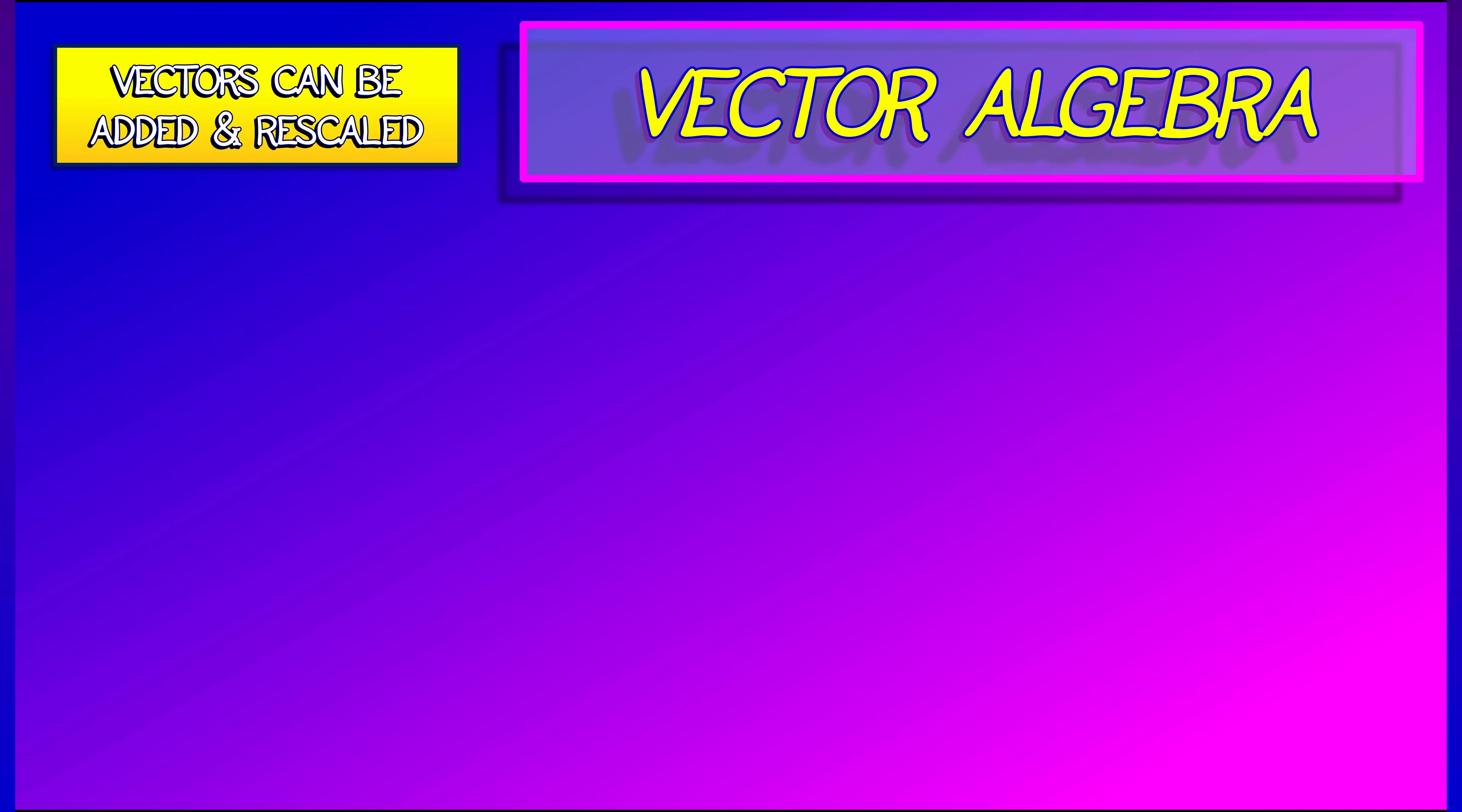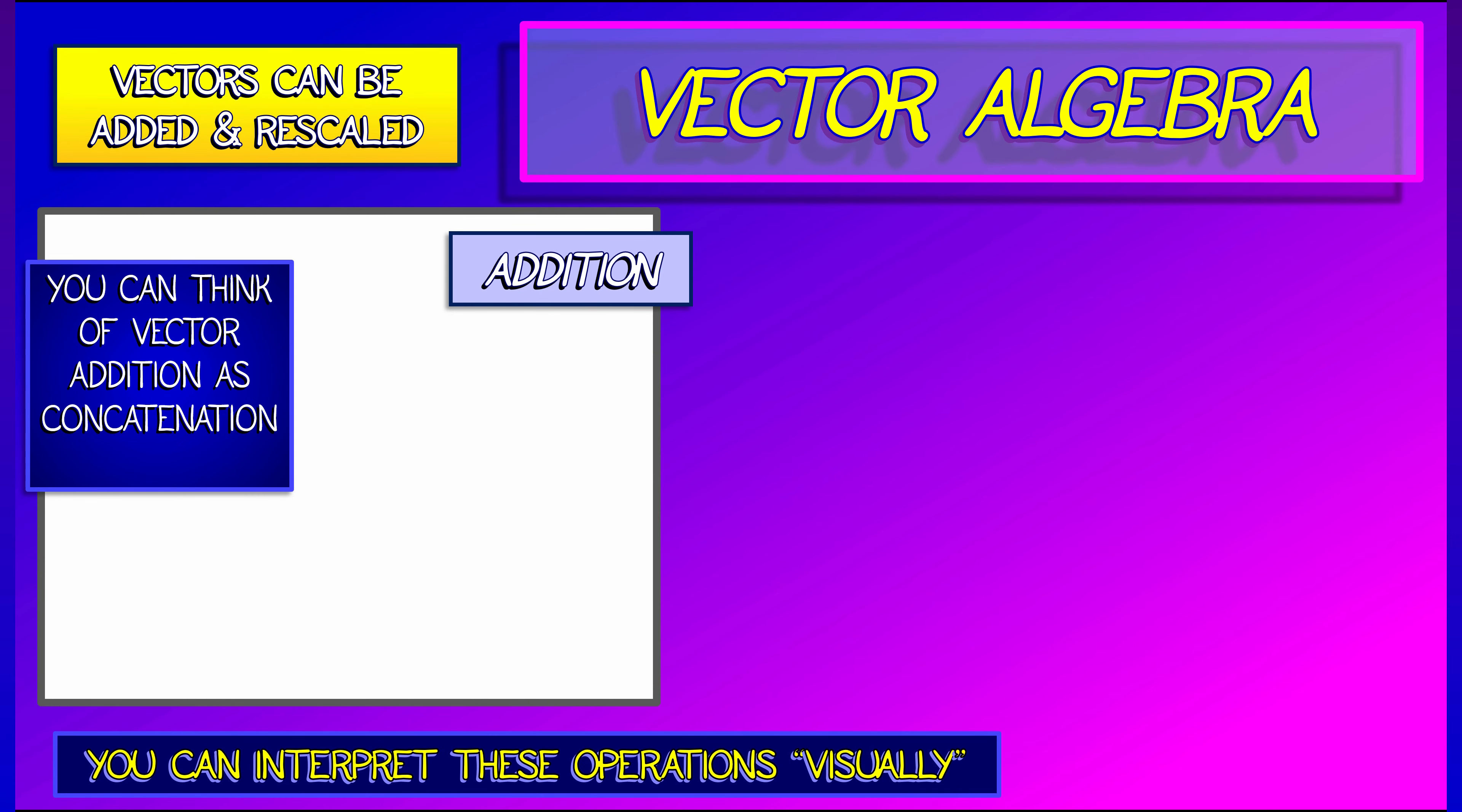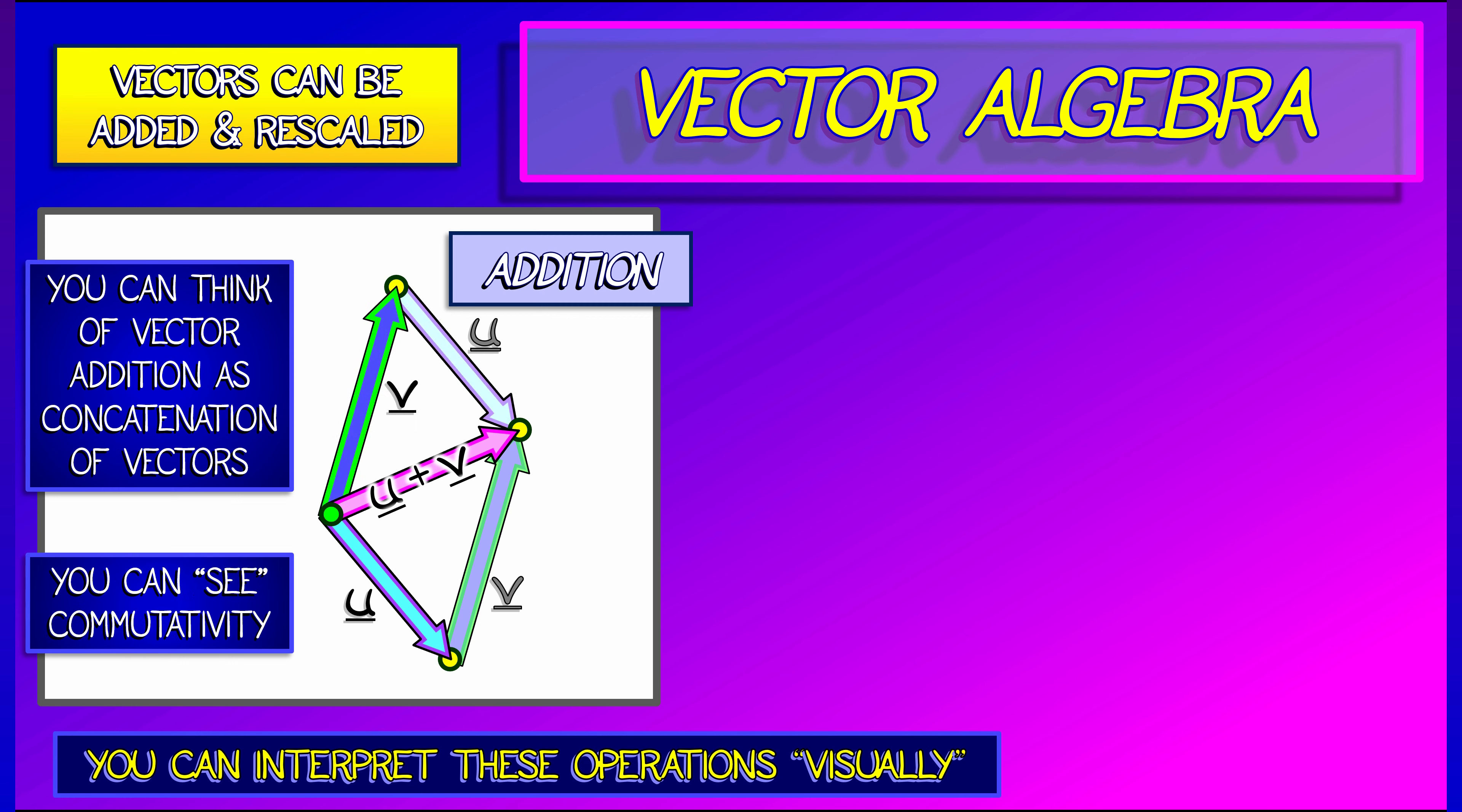That's the algebraic approach, but there's also a geometric or visual interpretation. Vector addition can be thought of as concatenation. Think of a vector as a difference between two points. To add vector v to vector u, take the tail of v and put it at the tip of u. Then the sum, u plus v, goes from the beginning of u to the end of v. What's nice about that visual interpretation is you can see many of these algebraic properties. For example, commutativity becomes this parallelogram identity.